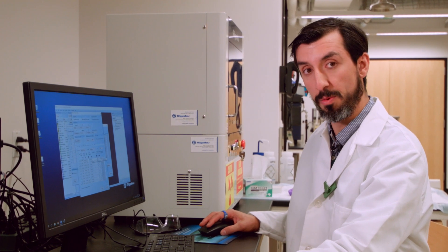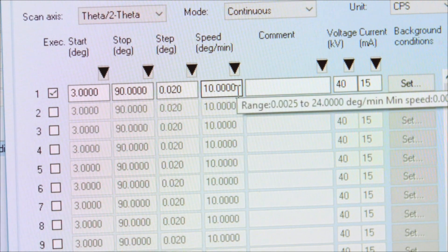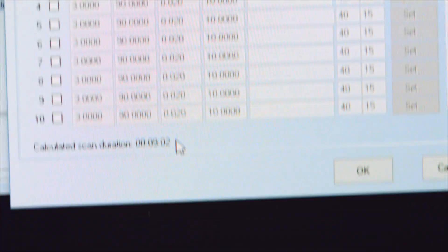If you'd like to increase the signal to noise, you can decrease the speed at which the sample is scanned. This will change the amount of time it takes to complete the scan. An estimate of the completion time is shown at the bottom of the screen. With the default conditions of 3 to 90 degrees in 2 theta, we would finish this collection in about nine minutes.